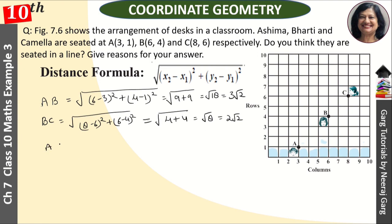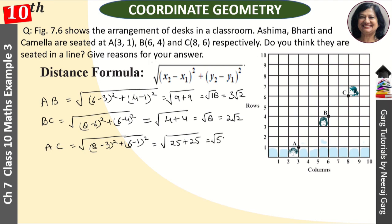Then we find AC. AC equals root of (8 minus 3) whole square plus (6 minus 1) whole square. That is 25 plus 25, which is 5 squared, equal to root 50, and we can write this as 5 root 2.